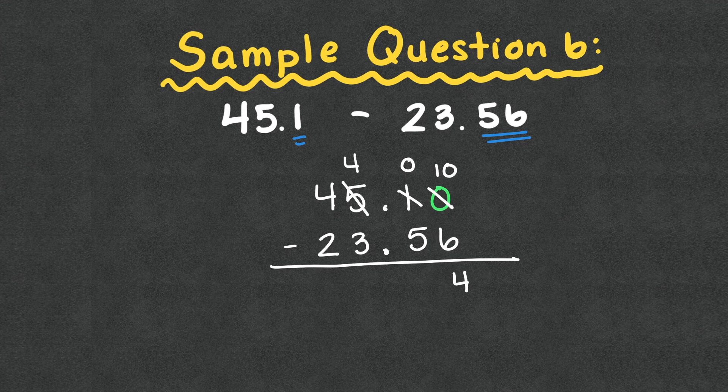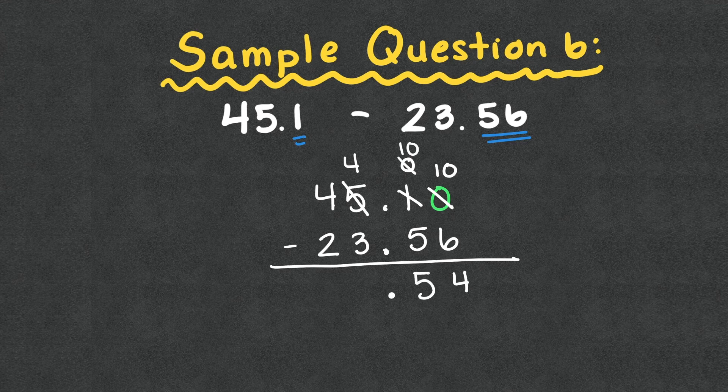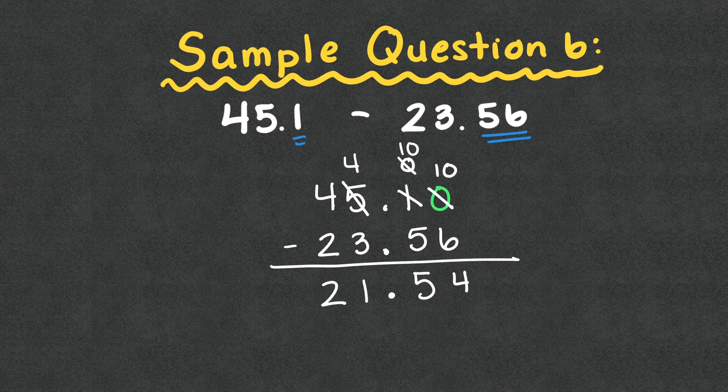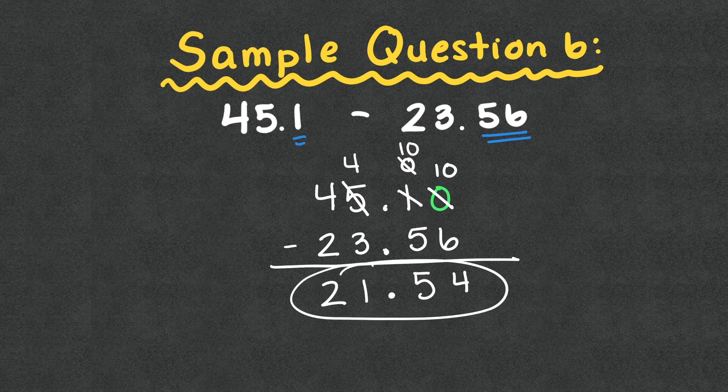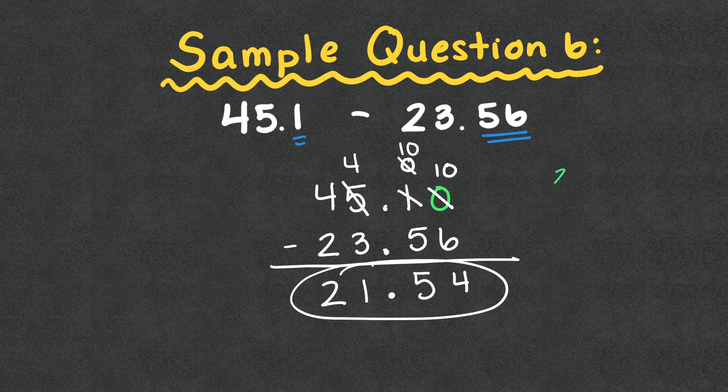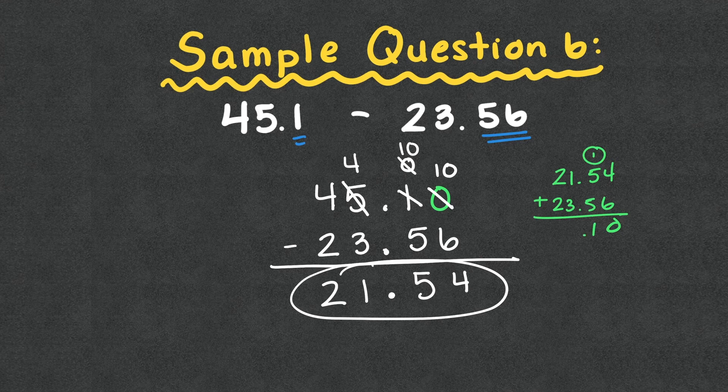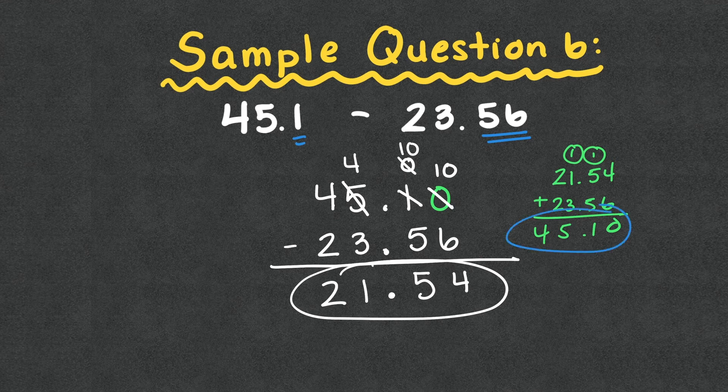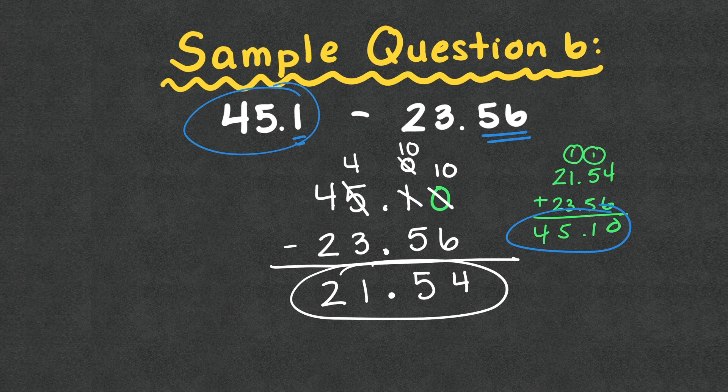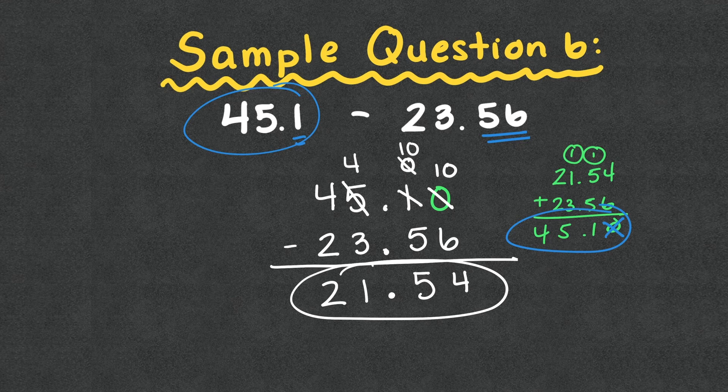Notice how that number is different than what we would have put had we not put a placeholder above. 0 minus 5. I can't do it. This 5 becomes a 4. This 0 becomes a 10. 10 minus 5 is 5. Bring down your decimal point. 4 minus 3 is 1. 4 minus 2 is 2. So in this case, our answer is 21 and 54 hundredths. Remember, if you ever are unsure, you can always add to check. I know we didn't go over this in other ones, but this one is why it gets a little weird. So we can add what we got plus what we subtracted and it should equal what we had in the beginning. So we see 45 and 10 hundredths, 45 and 1 tenth, same value. We talked about that in the key points. This 0 doesn't hold any value, so it does not have to show up.